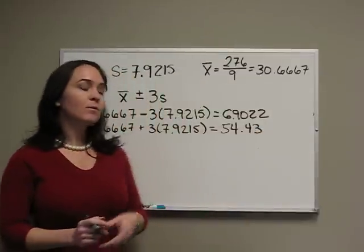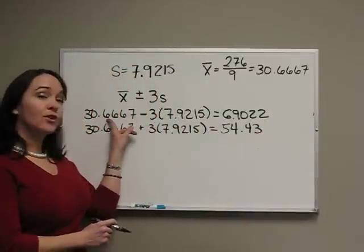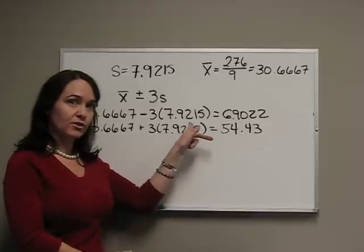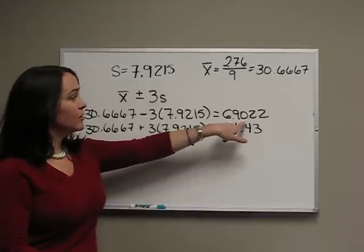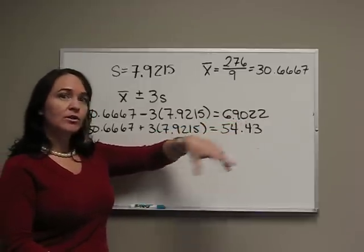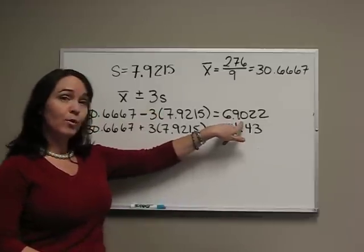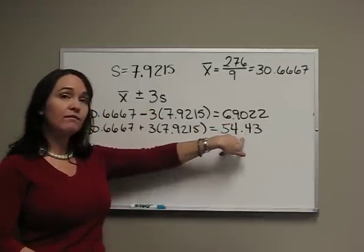Remember when you're subtracting, always take 30.6667 minus your multiplication. So we have our lower bound and our upper bound. All your data should be between 6.9022 and 54.43.